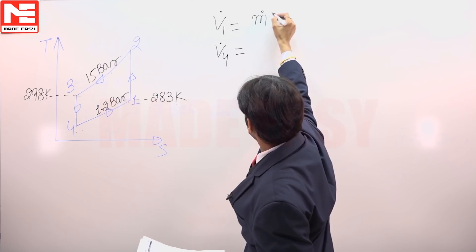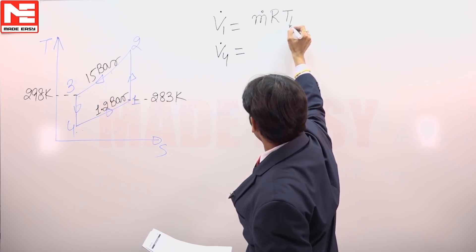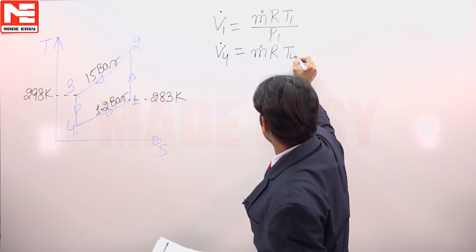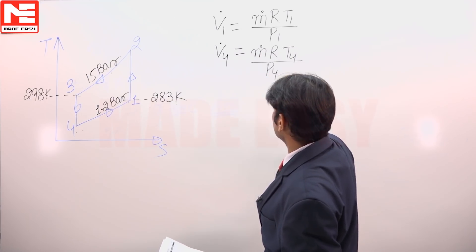By using PV equals MRT equation, V1 dot equals M dot RT1 upon P1, and V4 dot equals M dot RT4 upon P4.